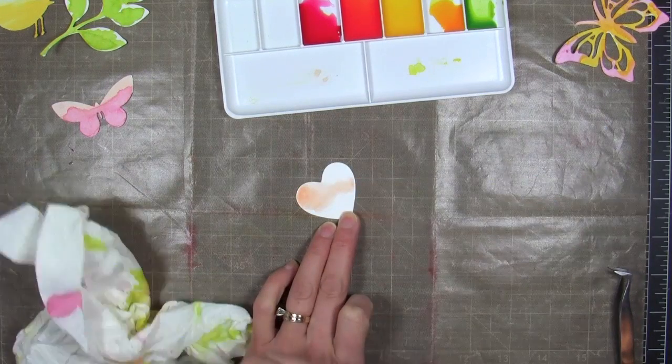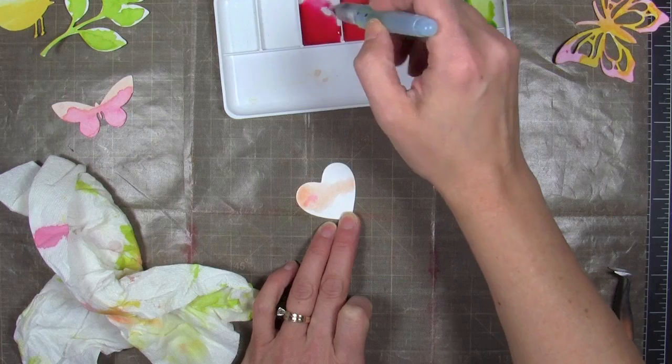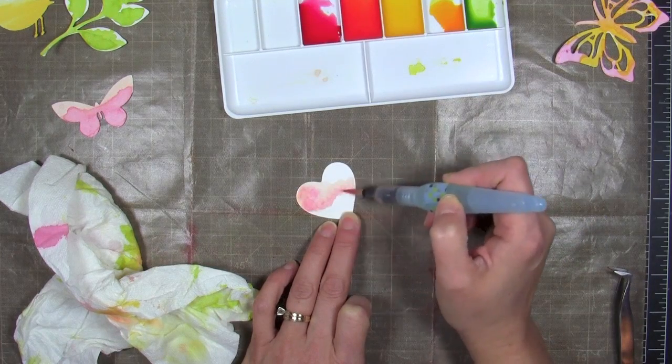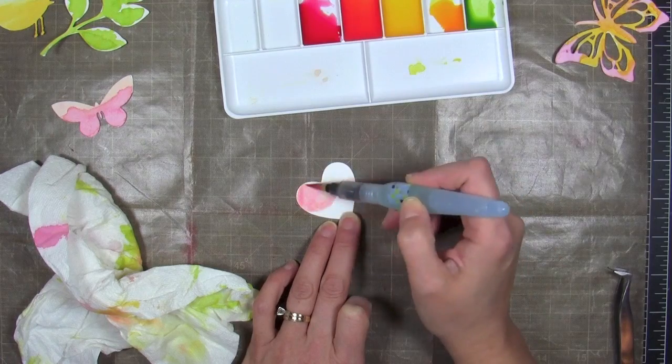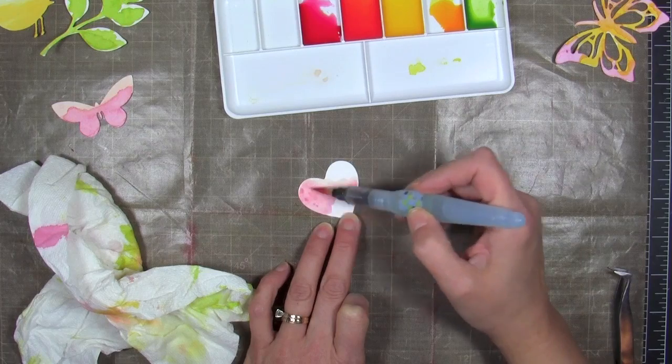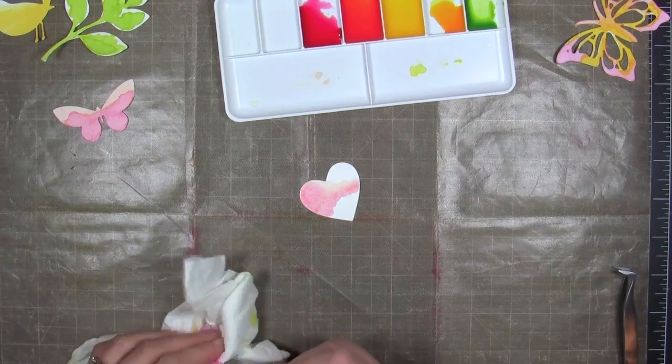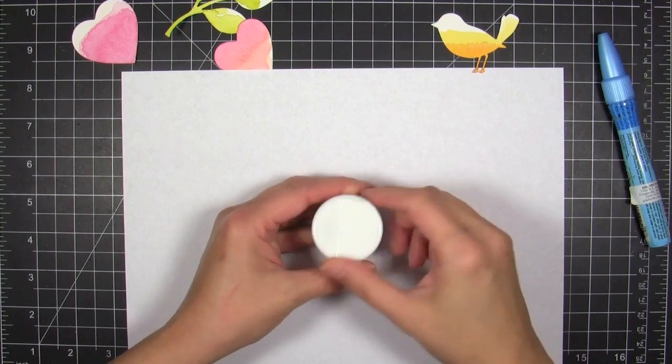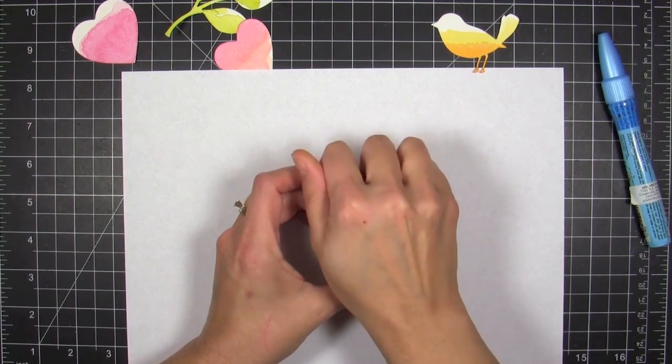I just kind of splash and smear and dob and plop it on there, add more intensity here and there. As you can see I'm really not being very careful. I like that splotchy look and you can also let it dry and then come back and add more color depending on how intense you want it.